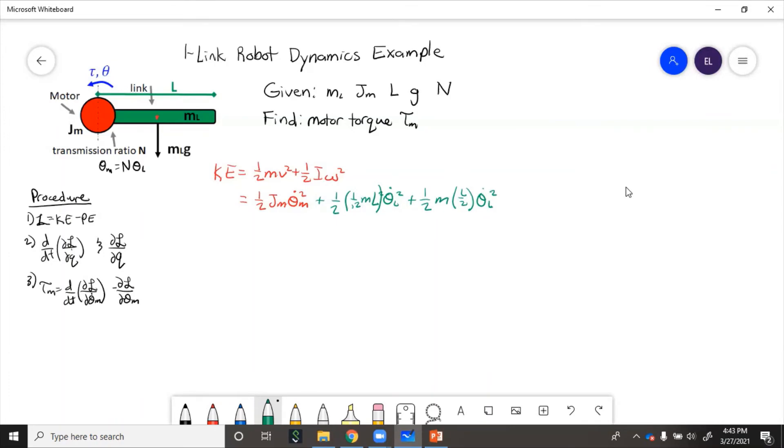From here, we need to substitute out because we have theta_m and theta_l, and we need to get this all in terms of just theta_m. So we'll use the equation theta_m equals n times theta_l and substitute. So this is the kinetic energy.